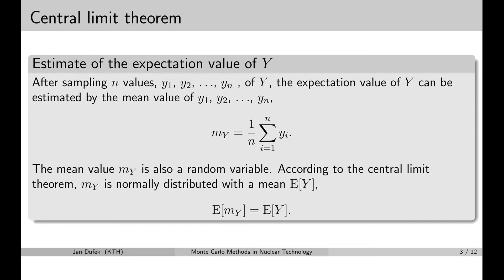As suggested previously, the mean value of the result calculated during a single simulation is also a random variable. So if you repeat the Monte Carlo simulation again with different random numbers, you will get a slightly different mean value. Let me demonstrate this on an example.